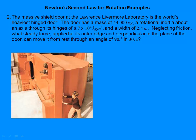The door has a mass of 44,000 kilograms, a rotational inertia about this axis of 8.7 × 10⁴ kilogram·meter squared, and a width of 2.4 meters. This is a huge door. Assuming no friction — a big assumption, must have really good hydraulic hinges — if she applies a constant force at the outer edge and perpendicular to the plane of the door, what force would it need to move it through a 90-degree angle in 30 seconds?